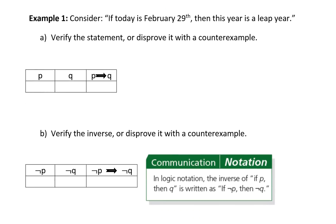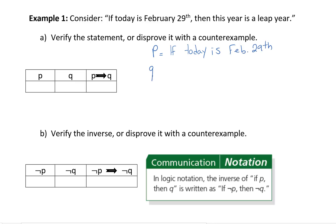Let's take a look at the first example. It says: if today is February 29th, then this year is a leap year. We have to look at what year we're in right now to verify the statement. P, our hypothesis — the first part of our conditional statement — is: today is February 29th. Q is: this year is a leap year.